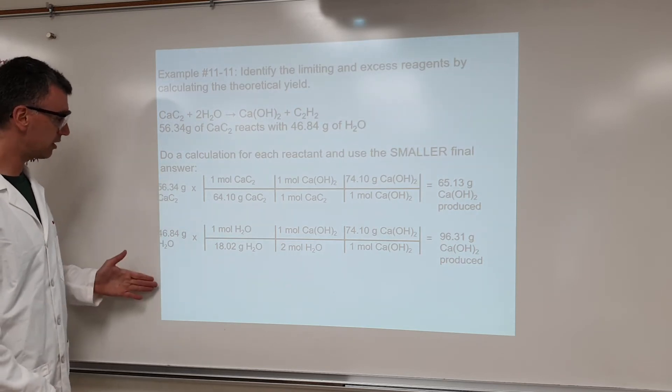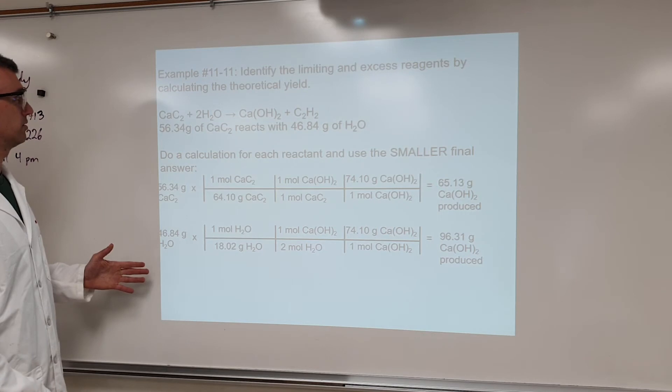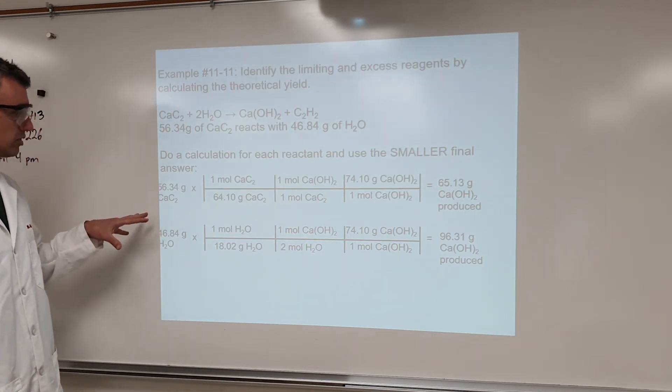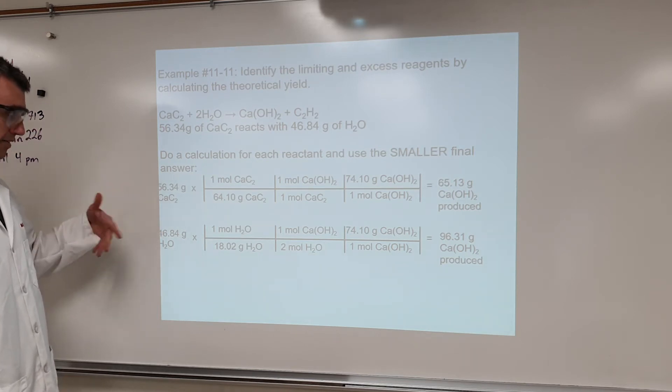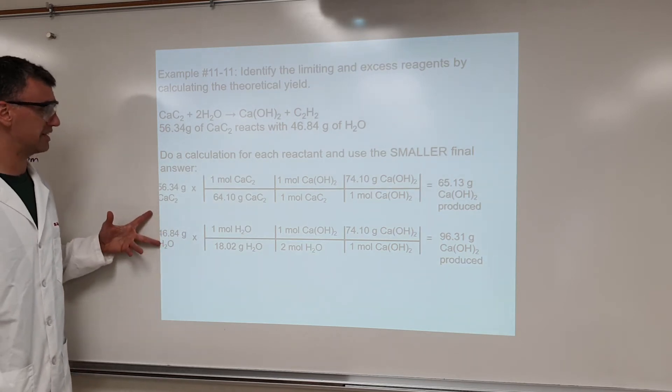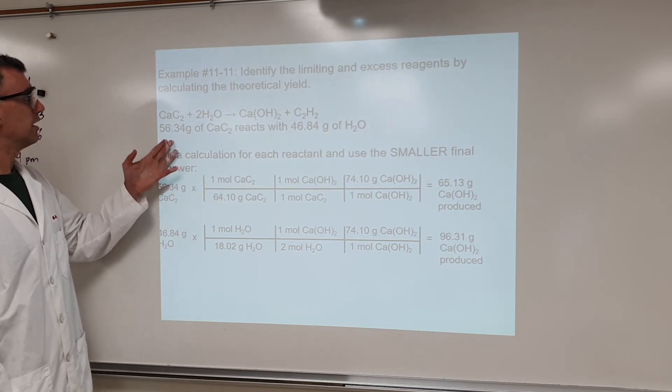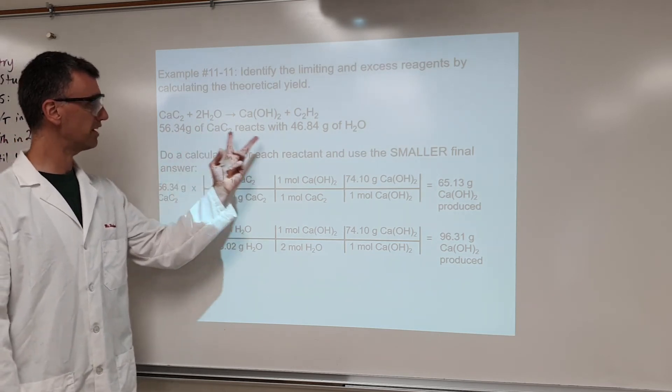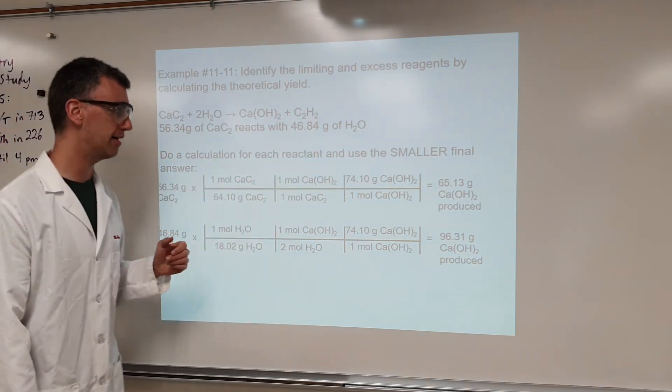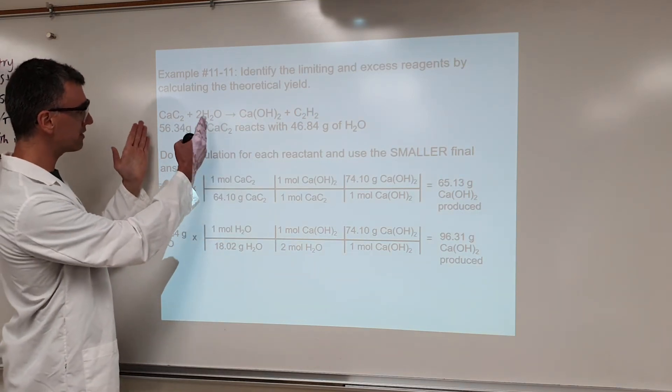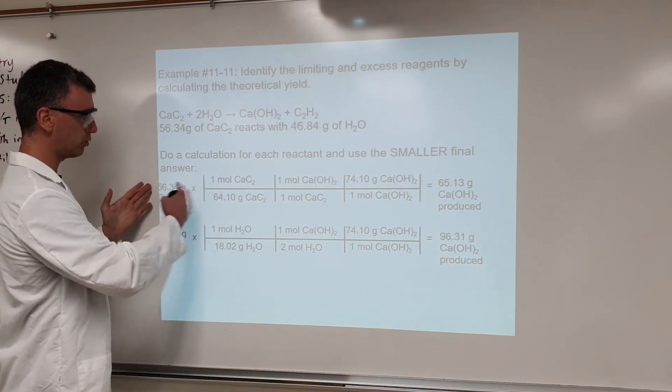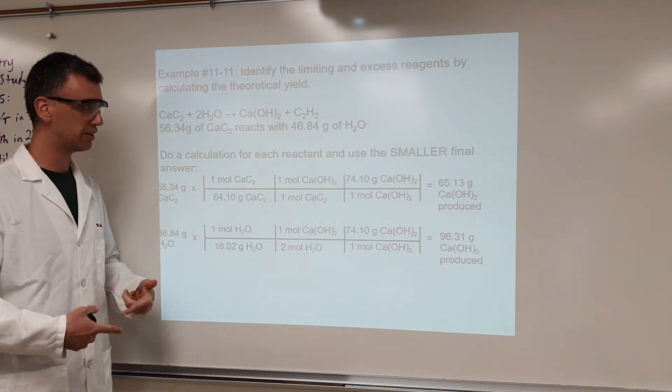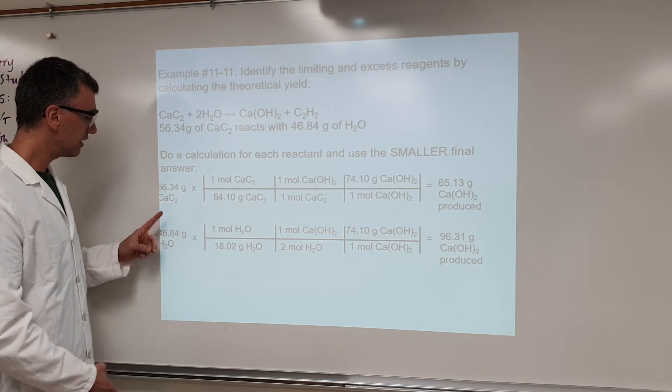You'll notice we've done two calculations for this example. What it is, is this is showing how we deal with you having a limiting reactant scenario. How do you know this? Well, you look at the question. It gives you two reactants, and it tells you how much of two reactants that you have. So, what this means is, in a question, if you were just given the mass of one reactant, that would be one calculation. But if you're given two masses for two different reactants, you know you've got to do two calculations,